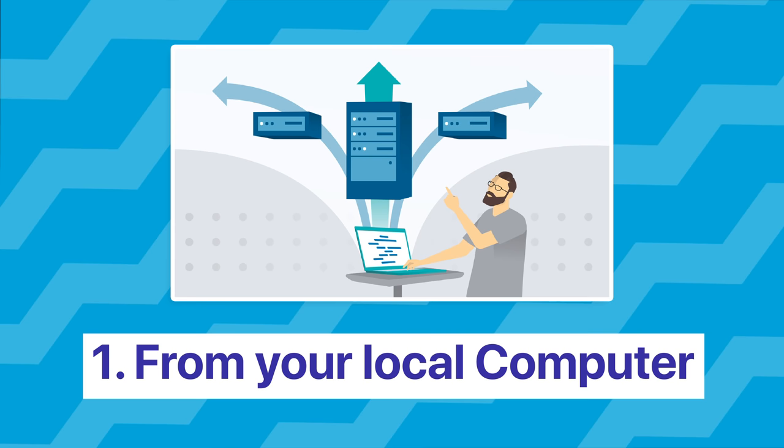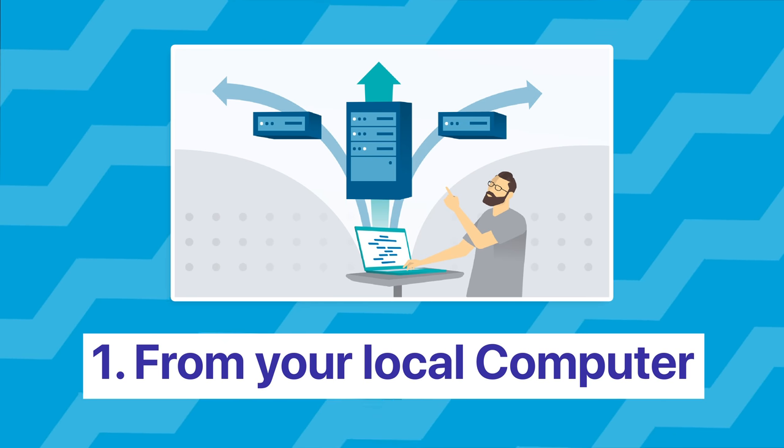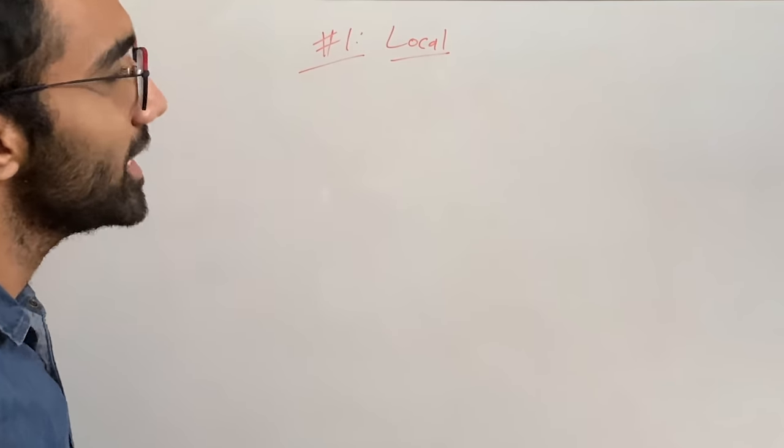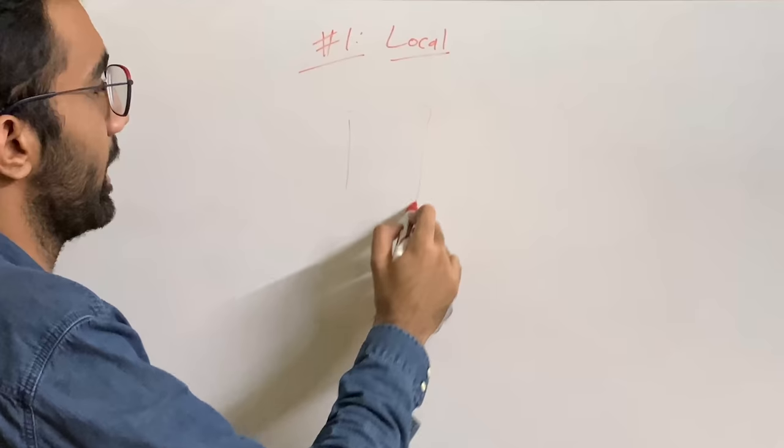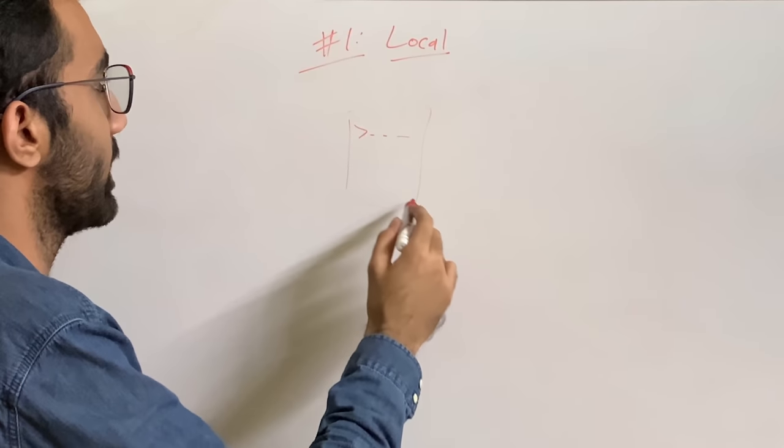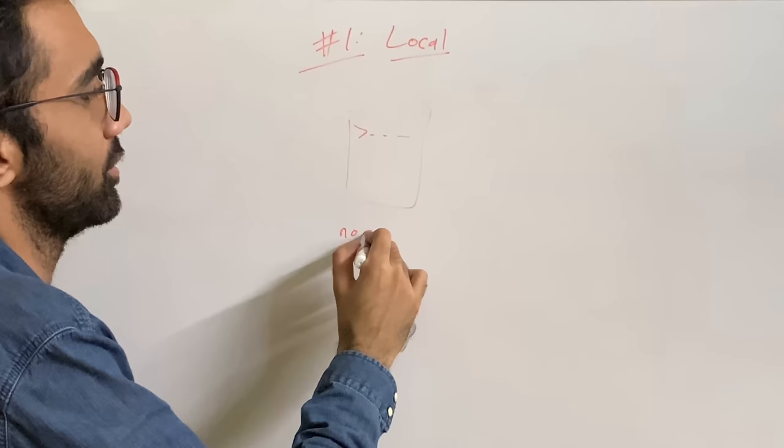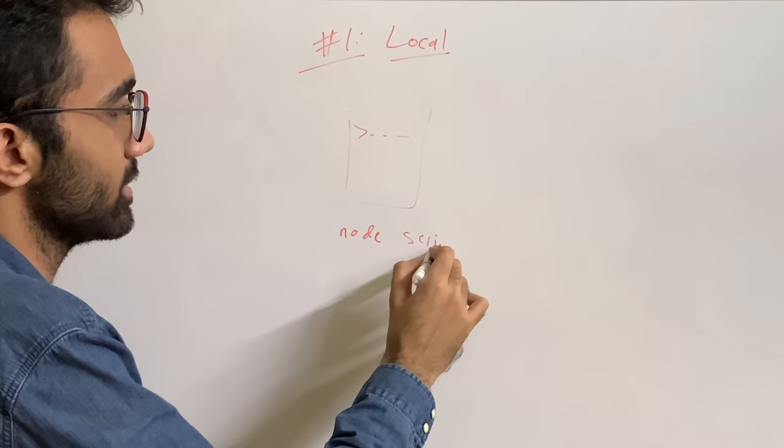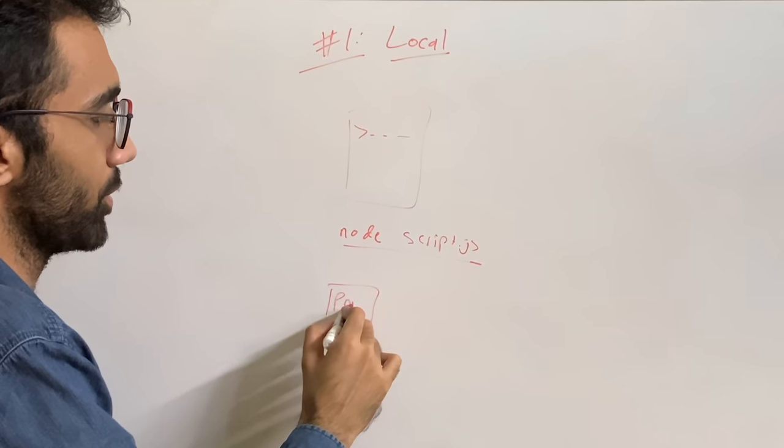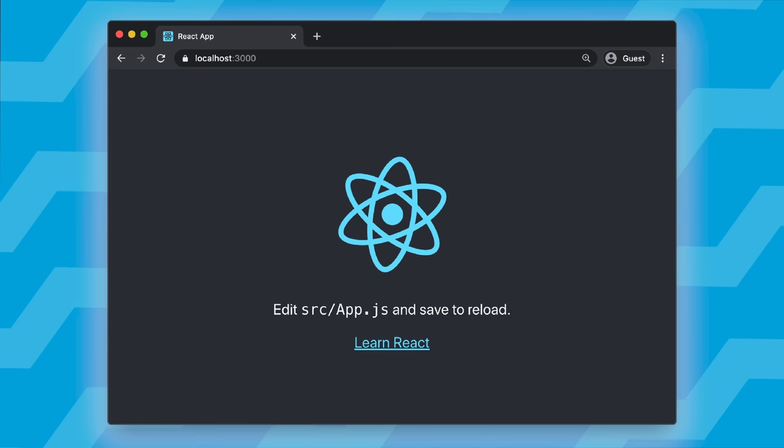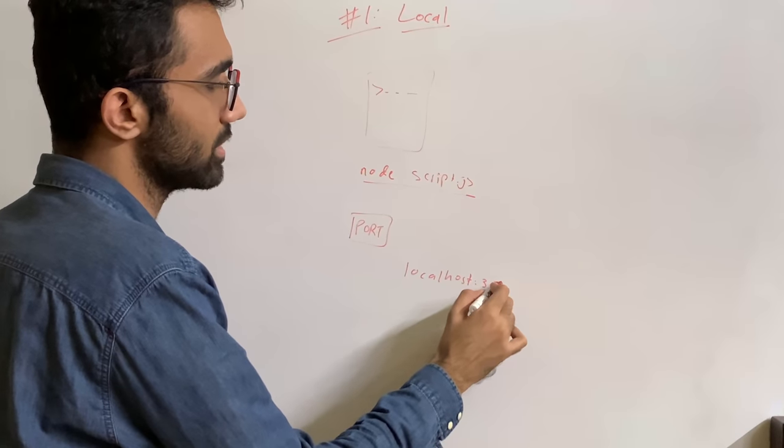The first way to host an API is from your local computer. What this means is that just like you develop your script in VS Code or whatever, you write and run it in a terminal with, let's say you're using Node, node script.js. Your API opens a port on your computer, and in the browser you just go ahead and write localhost:3000.